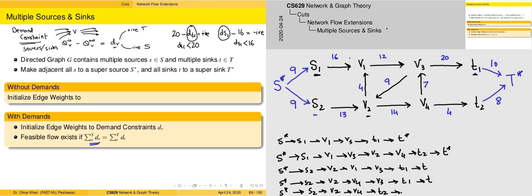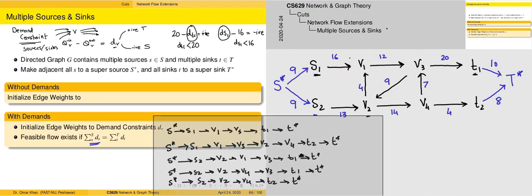Note that certain paths cannot be considered. For example, S1 → V1 → V3 → V2 → V1 → V3 → T1 → T* is not a valid path because a cycle is formed. We are not going to consider any cases where cycles are present in the augmented paths. These valid pathways are set aside for use in the algorithm.